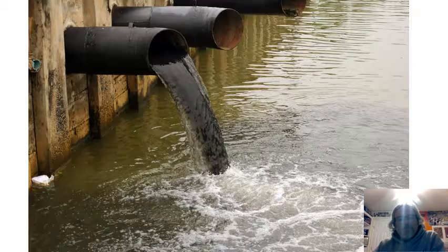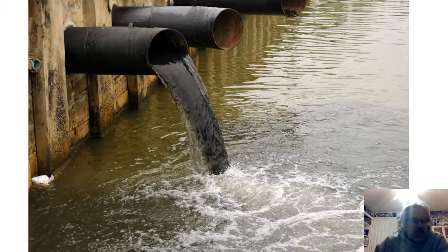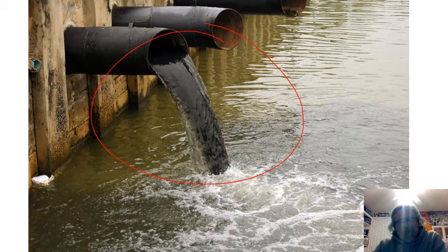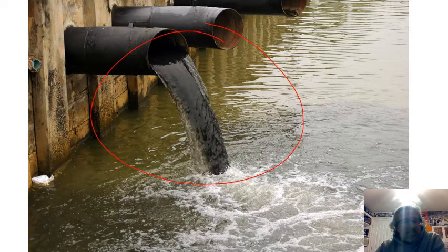Even today you still can't trust river water. You and I can't go down to the Chattahoochee River — a very clean urban river — and drink it directly, because it might be contaminated with fecal matter from animals. You've seen geese in the river; you wouldn't want to drink that water directly. So we can't trust surface water.